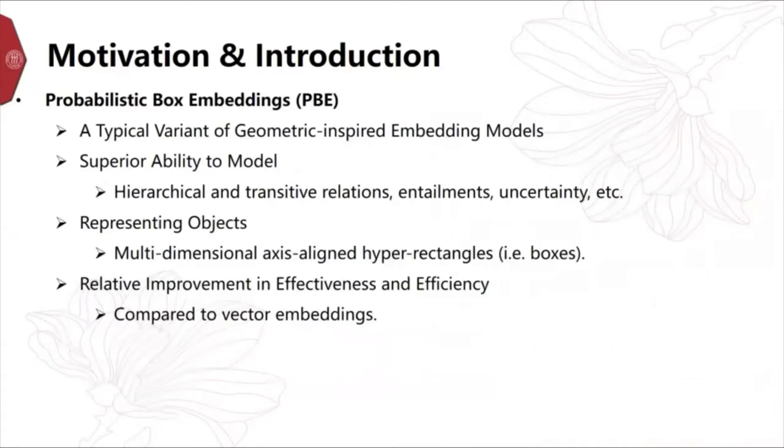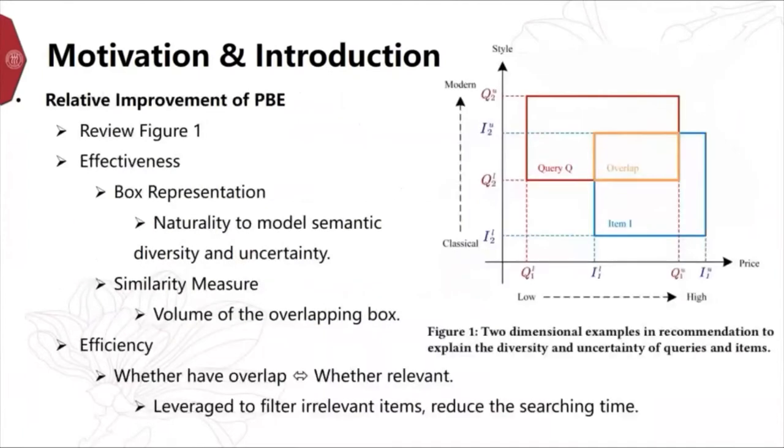Based on box embeddings, we will show how to provide relative improvements in effectiveness and efficiency. We believe that it can improve effectiveness and efficiency for ranking tasks. For effectiveness, from the example shown in Figure 1, we can see that after mapping the queries and items to box representation, box embeddings can naturally model the semantic diversity and uncertainty of queries and items. The volume of the overlapping box between query box and item box can be used as a similarity measure for the queries and items.